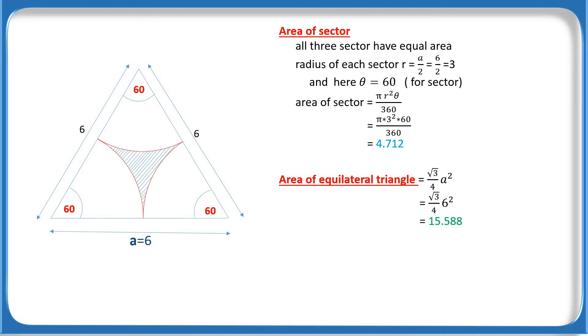Now area of the shaded region equals area of the triangle minus 3 times area of the sector. Put both values: 15.588 minus 3 times 4.712, and it will be 1.452, and that is the answer to the question.